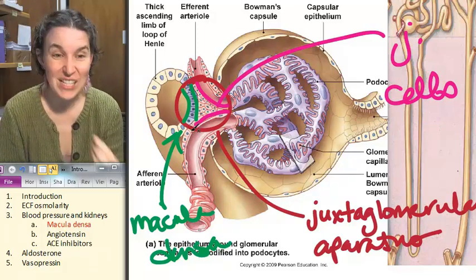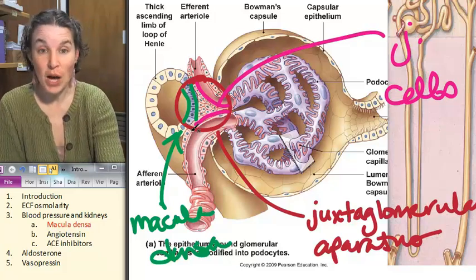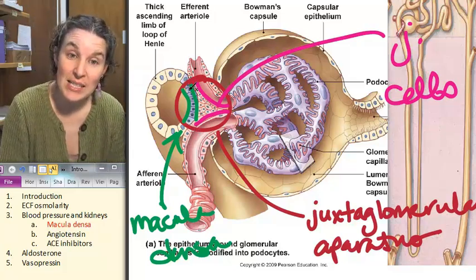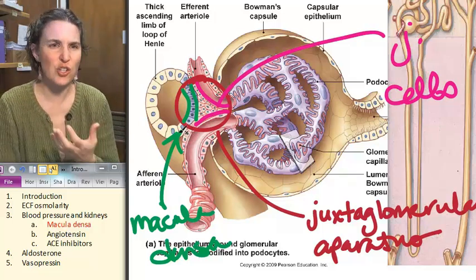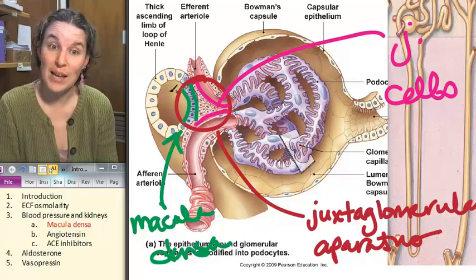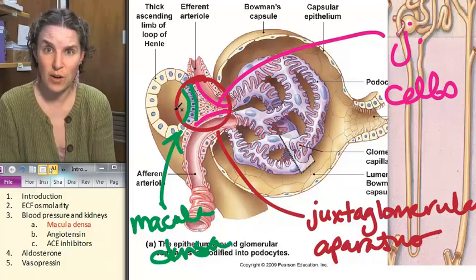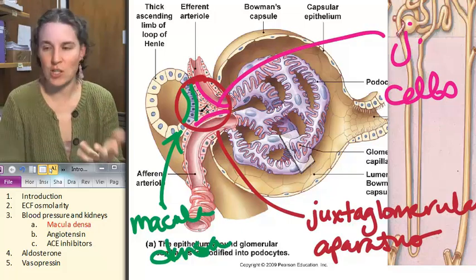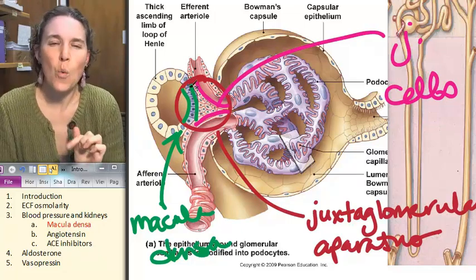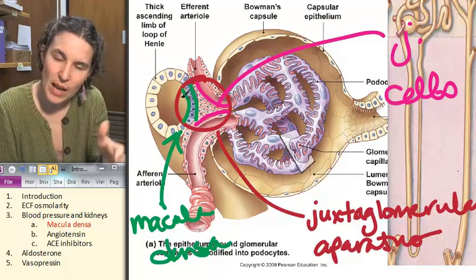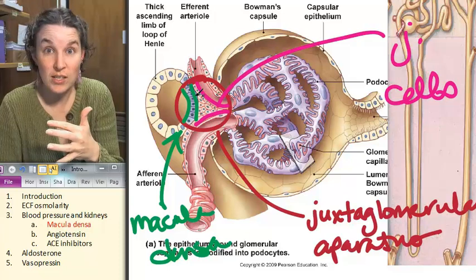Guess what happens here? This is really incredible. Basically, the bottom line is that the macula densa cells monitor the concentration or the characteristics of the fluid coming through the ascending loop of Henle, coming through the nephron. And they send a message.